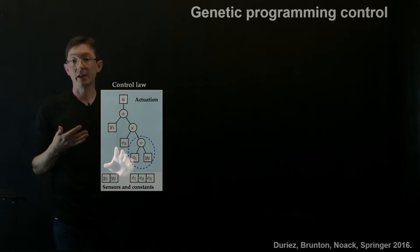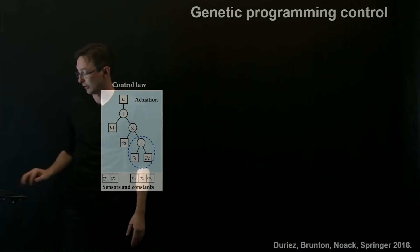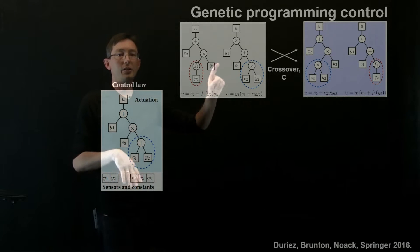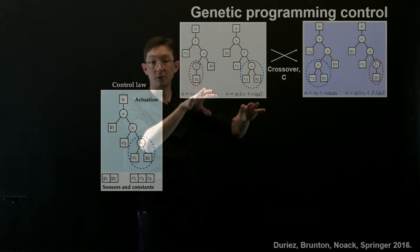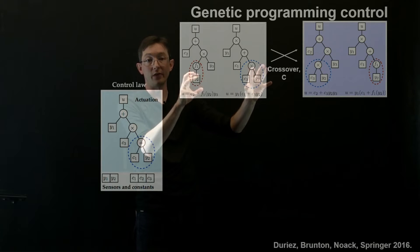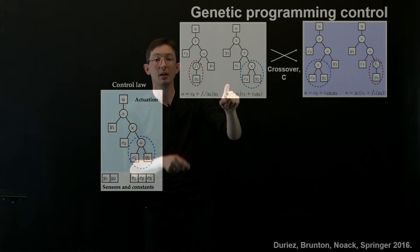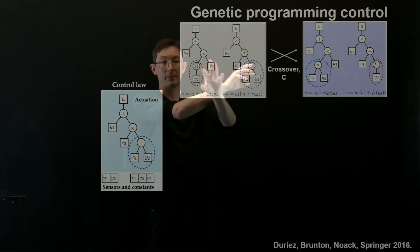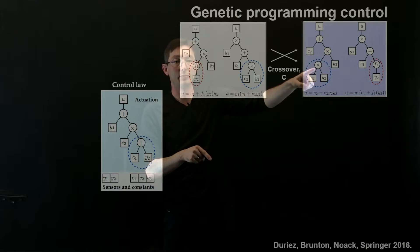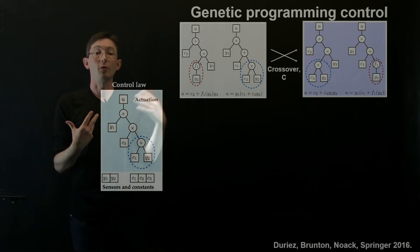And then just like in genetic algorithms, I have these genetic operations to get future generations. So one operation is crossover. So I take two good performing individuals here and I pick some portion of DNA from each of them and I just swap them. So this little branch here gets snipped and this little branch gets snipped and I just swap them. So now this guy has the blue group and this guy has the red group. So that's this genetic crossover.